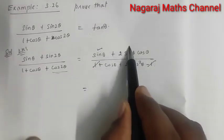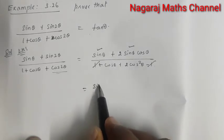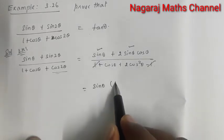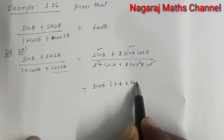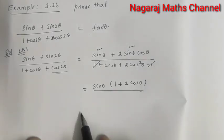In the numerator, sin θ is common. Taking sin θ out gives sin θ times (1 + 2 cos θ), divided by the denominator.